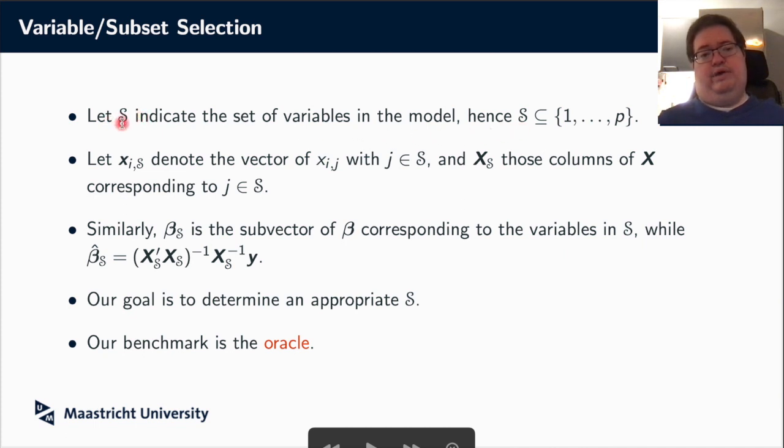This set will be helpful to indicate from our variables or regressors which ones we are actually including. So if I write x_i and then a second subscript S, that indicates it takes those elements out of this vector that corresponds to those j's in S. So x_{i,S} are the i-th observation of the variables, for instance, 1, 3, and 5.